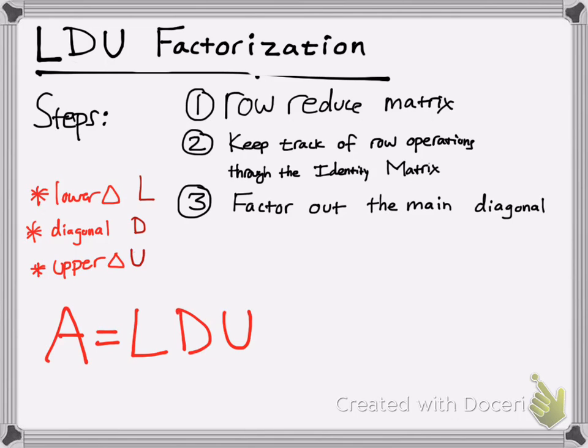And how I like to think about it is similar to LU decomposition. How I like to think about it is, A is your matrix, right? And it can be split up into three different parts in this case. So you have your lower triangular matrix, your diagonal matrix, your main diagonal, and your upper triangular matrix.